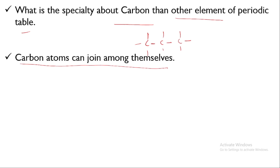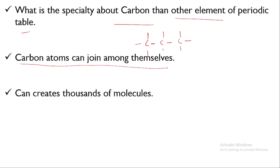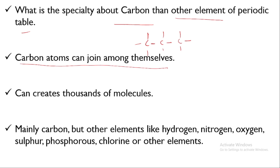This special property makes organic chemistry a special branch of chemistry based on carbon. This is organic chemistry. You can create thousands of molecules using carbon and other elements like hydrogen, nitrogen, oxygen, sulfur, phosphorus, and chlorine — all forming organic compounds that contain carbon.